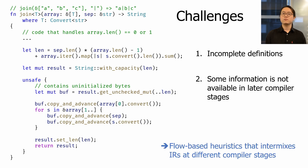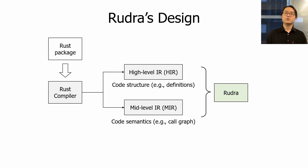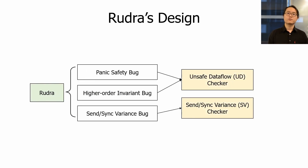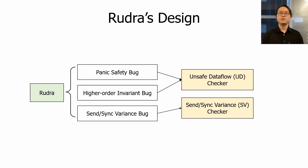Our solution is a flow-based analysis that intermixes IRs at different compiler stages. Rudra works as a custom Rust compiler and extracts two internal IRs. It uses the high-level IR (HIR) to extract code structure such as type and function definitions and the location of unsafe blocks, and the mid-level IR (MIR) to extract code semantics such as call dependencies. Rudra uses these two IRs to detect the three bug patterns, implementing two core algorithms: the unsafe data flow checker and the send-sync variance checker. We will focus on the unsafe data flow checker in this talk.